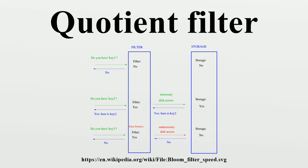Three additional bits are used to reconstruct a slot's fingerprint. They have the following functions: 'is_occupied' is set when a slot is the canonical slot for some key stored in the filter; 'is_continuation' is set when a slot is occupied but not by the first remainder in a run; 'is_shifted' is set when the remainder in a slot is not in its canonical slot.